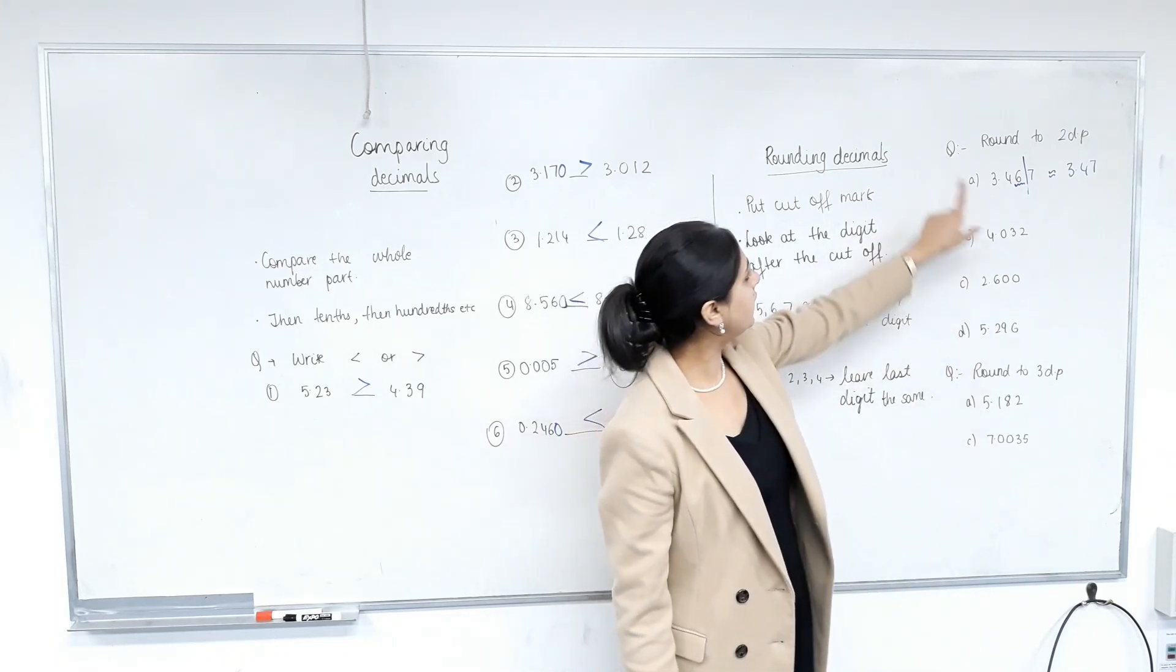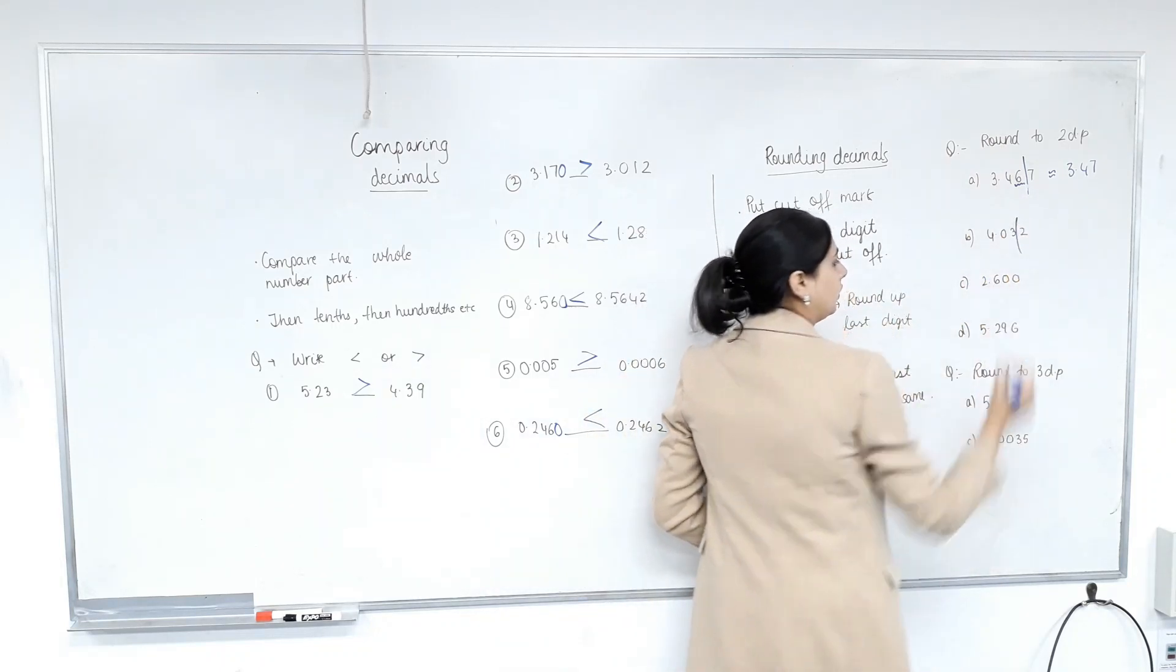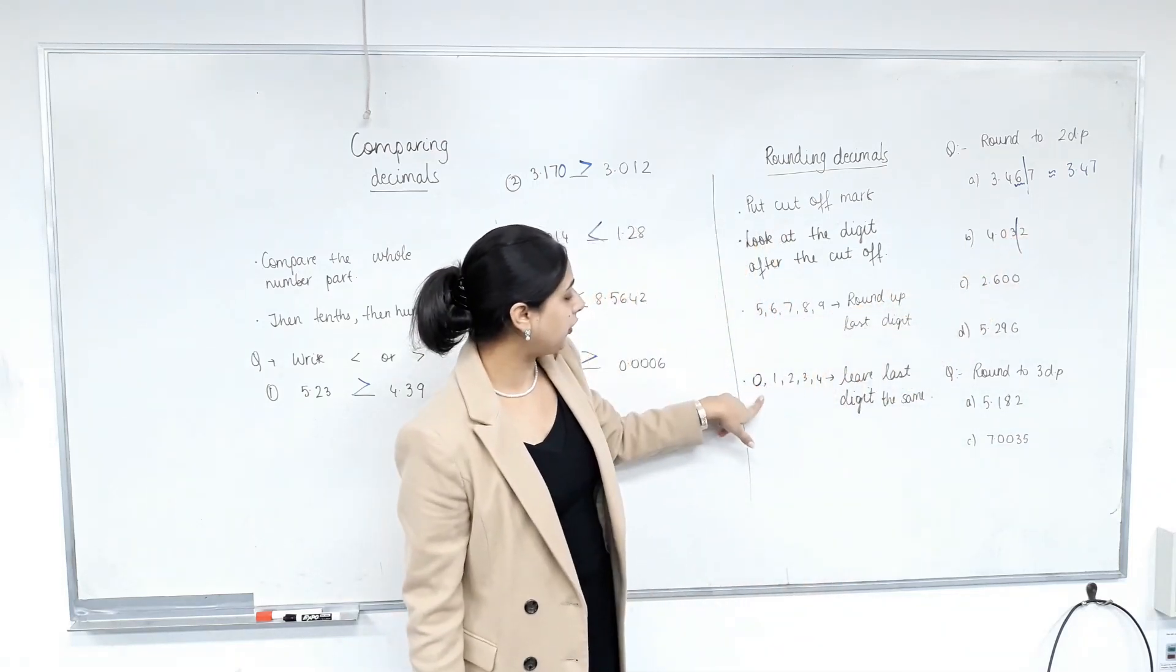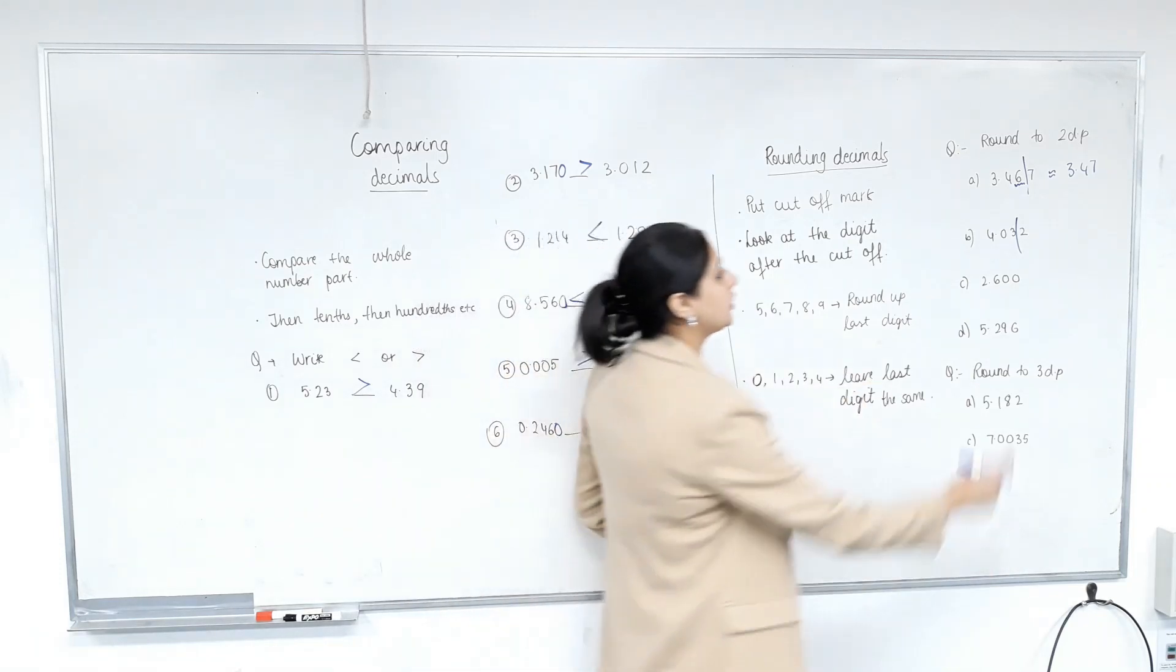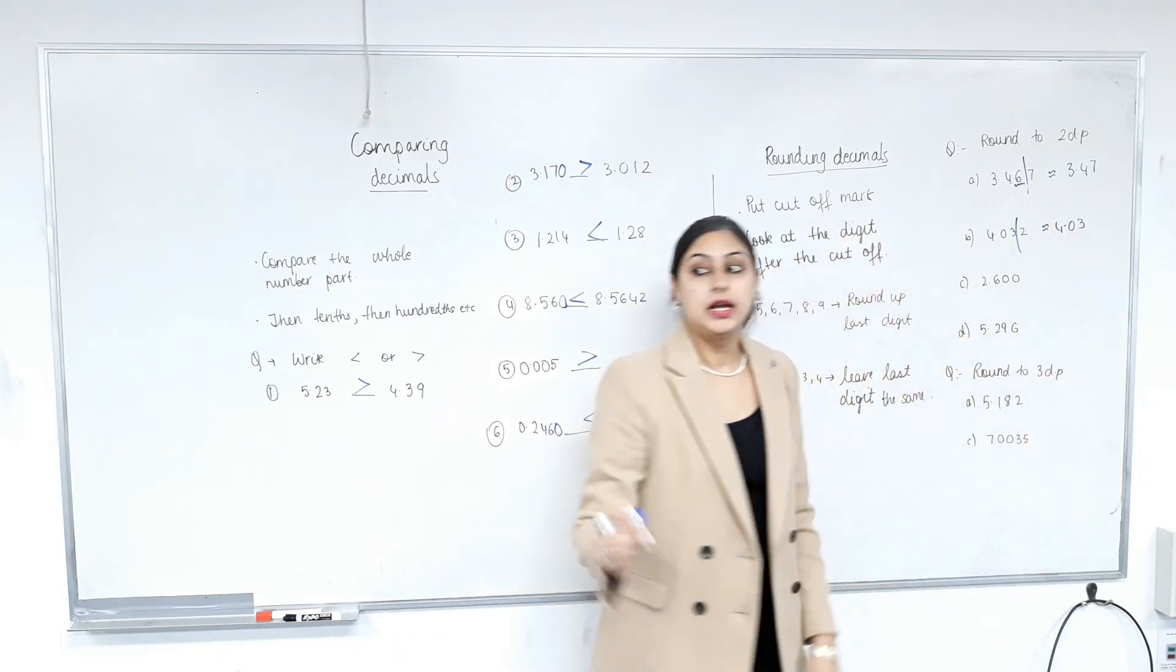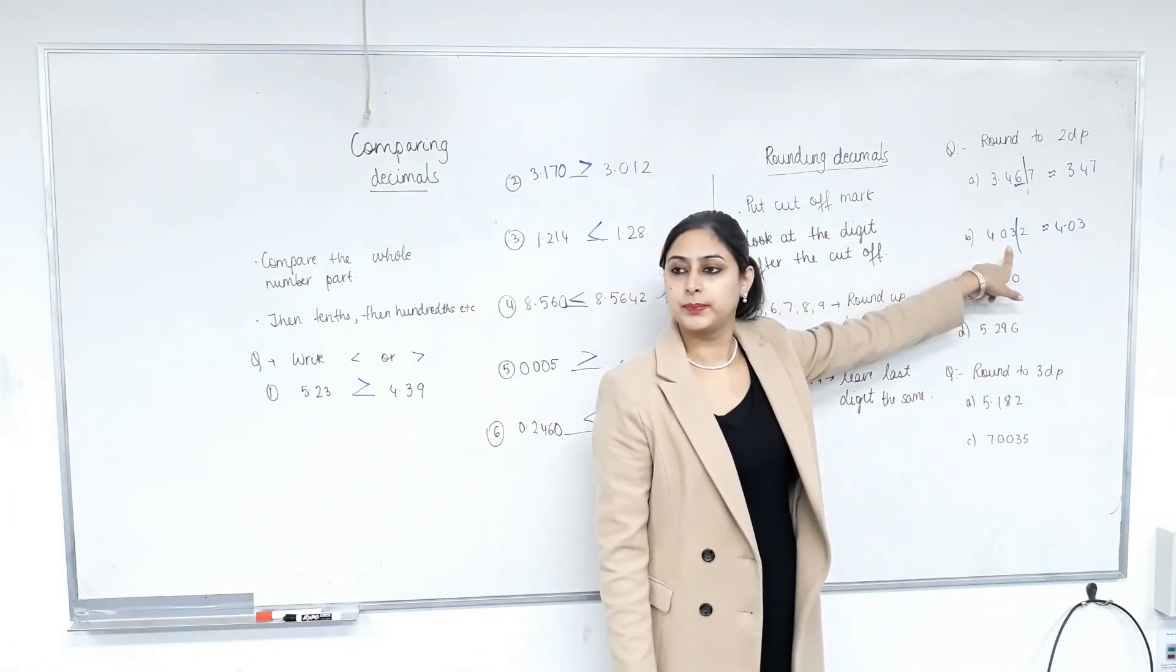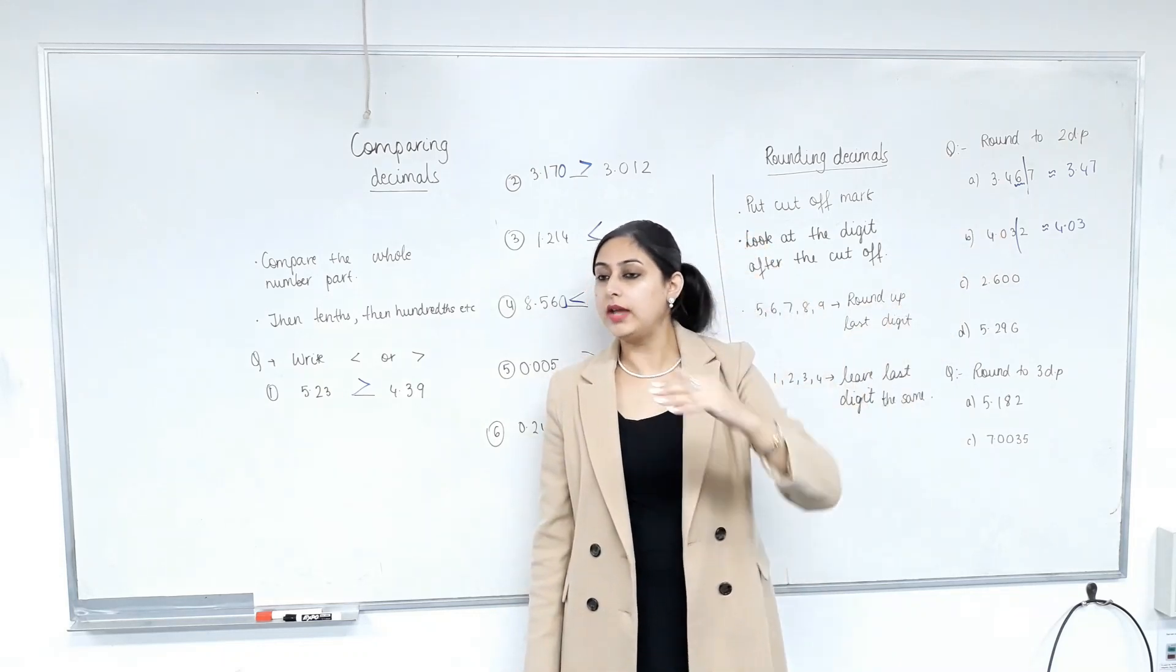Yep. Now, we're still rounding to two decimal places, so I'm going to put my cutoff mark. So one, two. So once we put the cutoff mark, we look at the digit after the cutoff. Two. If the digit after the cutoff is zero, one, two, three, or four, you leave last digit the same. So that means it will be approximately equal to four point zero three. A sin that a lot of students do in CNA classes is they round this down to four point zero two. That never happens. We either keep the numbers same or move it up. We never round it down.